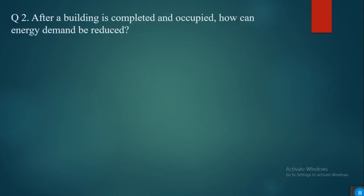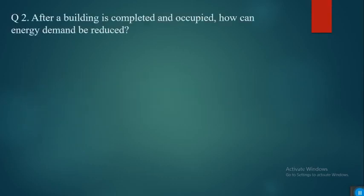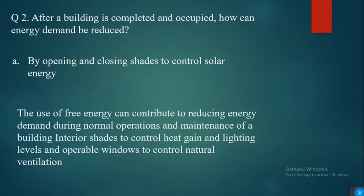Because of the added insulation, the cost to cool the building can be reduced. Question number two: after a building is completed and occupied, how can energy demand be reduced? The answer is by opening and closing shades to control solar energy, because the use of free energy can contribute to reducing energy demand during normal operations and maintenance.